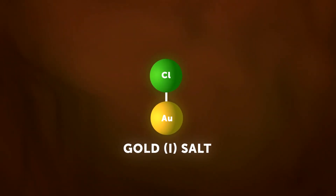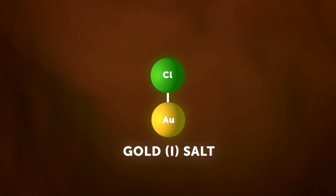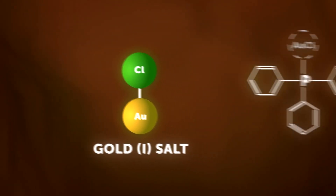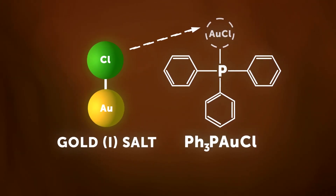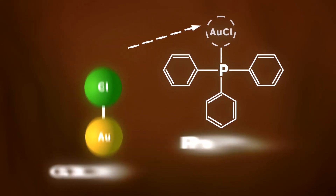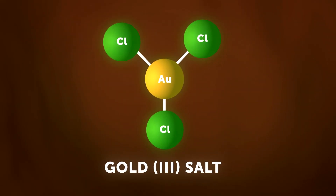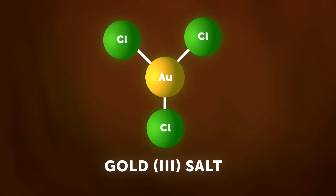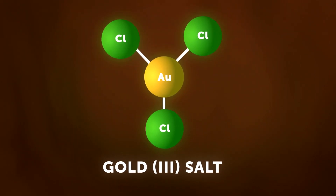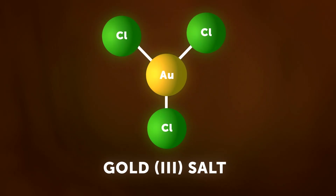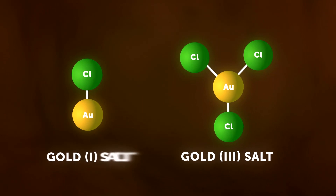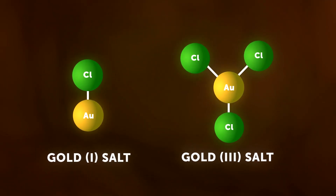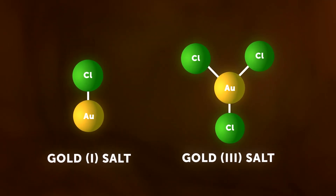We discovered that gold salts in oxidation state one are actually extremely efficient at activating the carbon-hydrogen bonds of a particular class of aromatic compounds that have low electron density in the aromatic ring. It had been known since the 1930s already that gold(III) was really good at activating the carbon-hydrogen bonds of aromatic molecules that have very high electron density. So gold(I) activates electron-deficient aromatics, gold(III) activates electron-rich aromatics — completely selective.